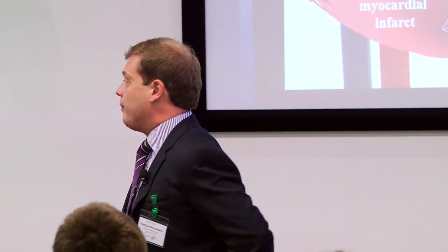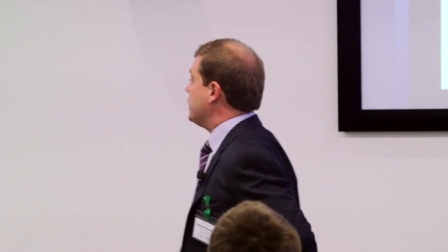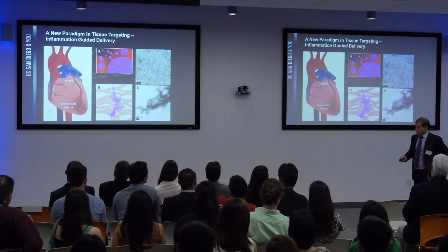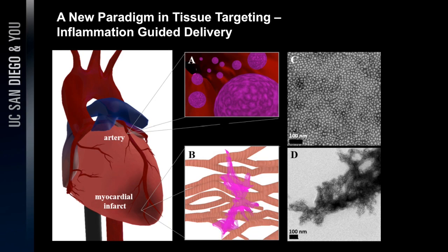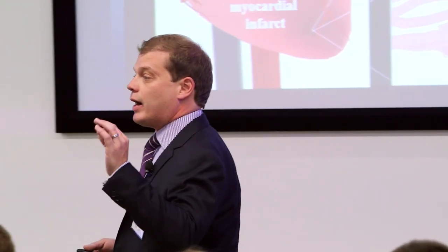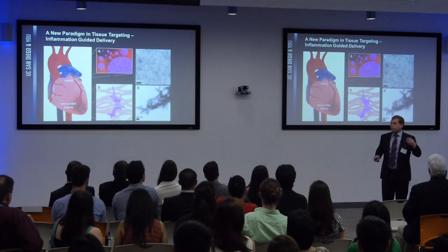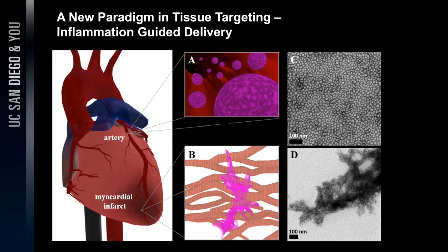Heart disease is the largest killer of people all over the world who die from disease — slightly more people die of heart disease than cancer in general. Heart attack is one of the outcomes, of course, of having heart disease. What happens essentially, as many of you know, is a coronary artery is blocked. The muscle tissue at the end of that coronary artery fails to receive oxygenated blood, and it stops working.